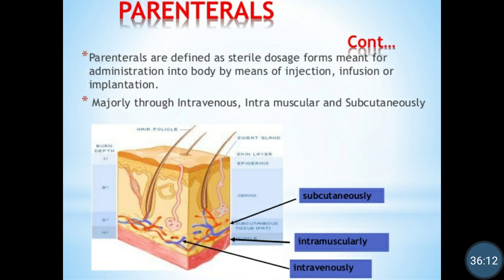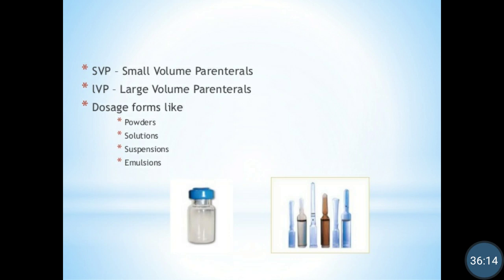This is about parenterals. There are two types of parenterals depending on their volume — small volume parenterals and large volume parenterals. From 0.5 ml to 100 ml, we can say them as small volume parenterals, and above 100 ml up to 1000 ml are large volume parenterals. Generally, small volume parenterals are packed in vials or ampules, and large volume parenterals like infusions are packed in plastic or glass bottles.